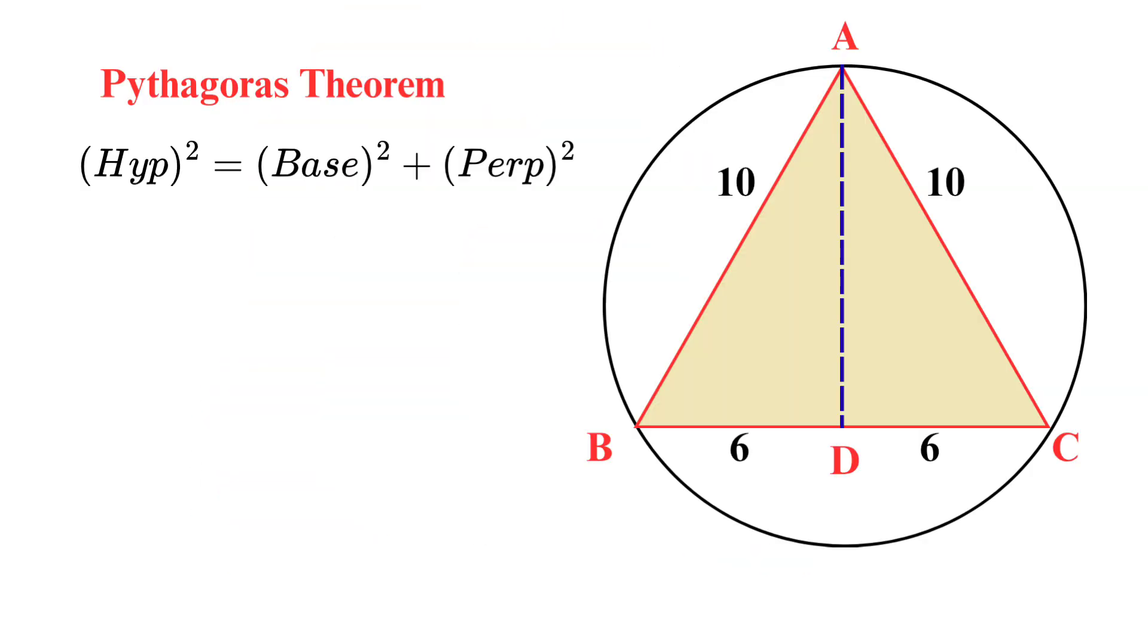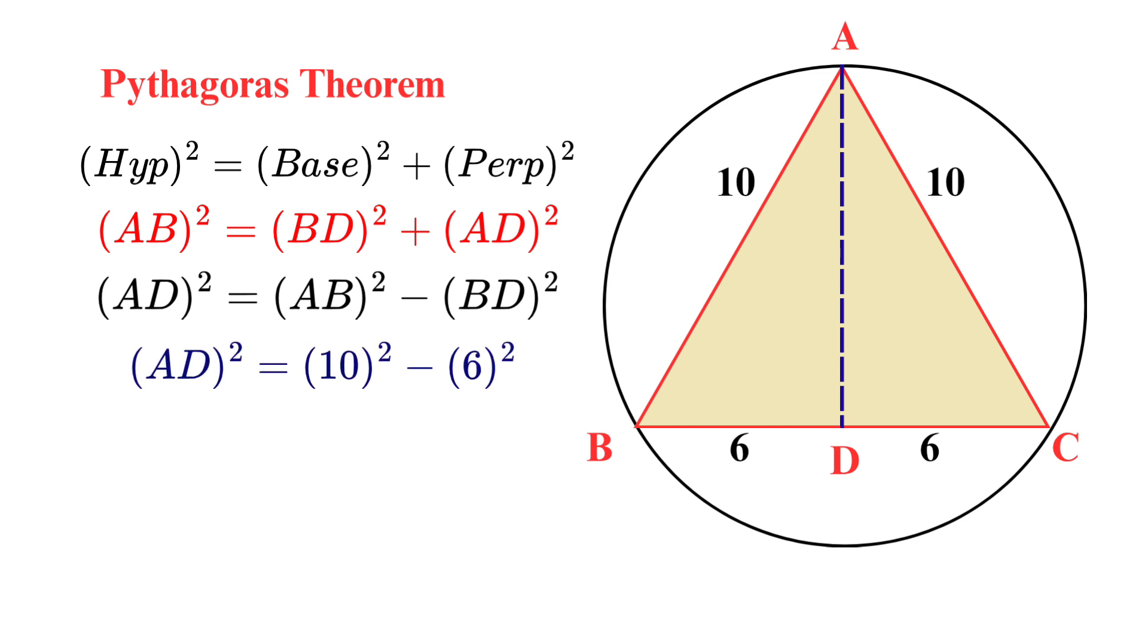Let's solve this. AB whole square equal BD whole square plus AD whole square. Or AD whole square equal AB whole square minus BD whole square. Now, substitute the value. This becomes AD whole square equal 10 square minus 6 square. AD whole square equal 100 minus 36. AD whole square equal 64. Now, we take square root on both sides. And this becomes AD equal 8. Therefore, the length of the perpendicular AD equal 8.